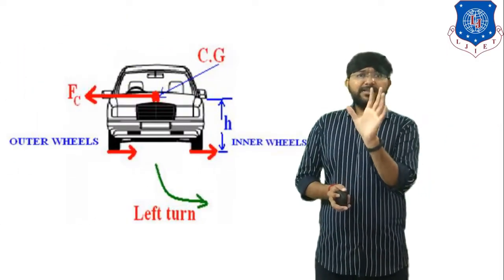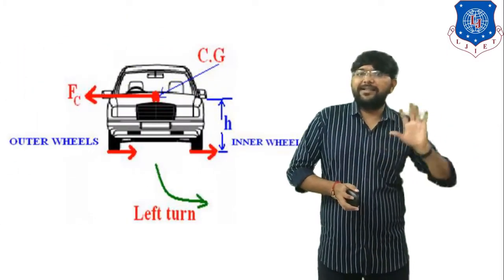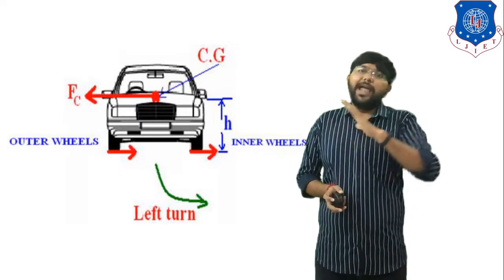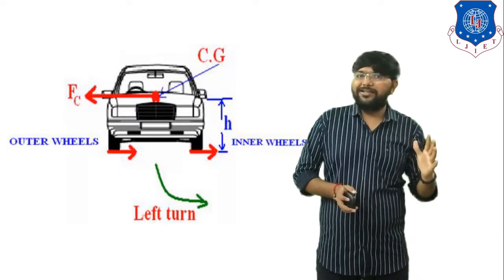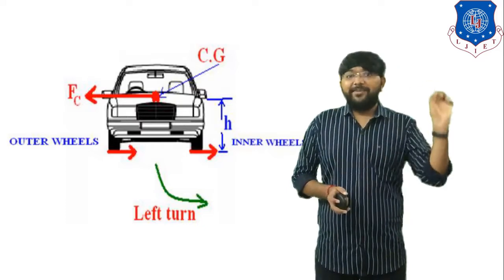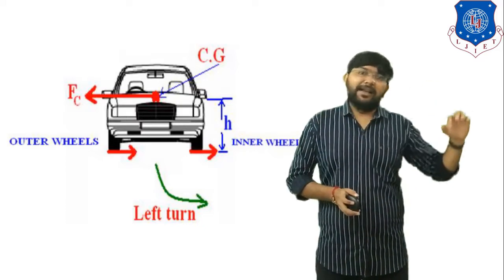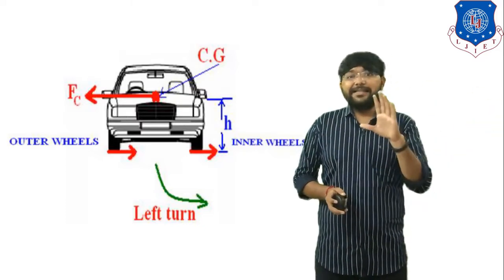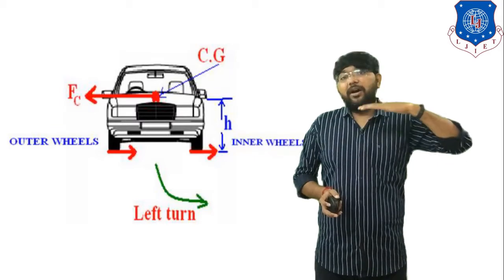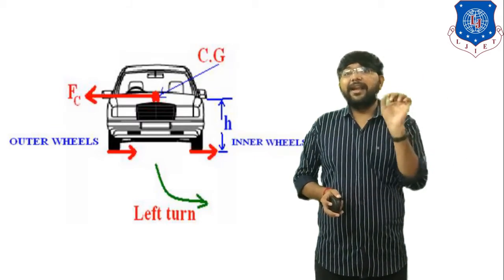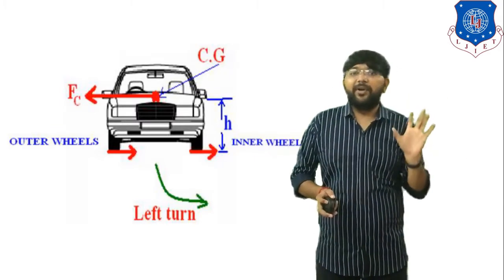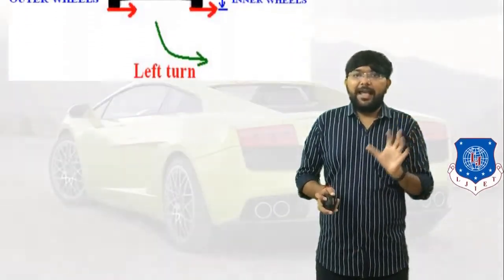This is the simple line diagram of the car. In this diagram you see that there are two inner wheels and two outer wheels. The car takes a left side turn. FC indicates centrifugal force and CG. The distance between the earth surface and CG indicates small h.